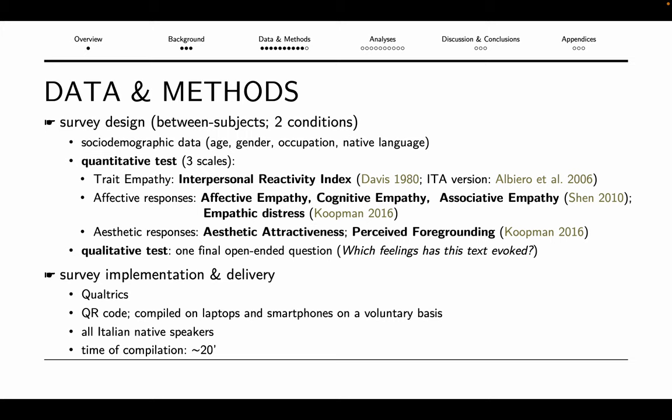The surveys contained the same sections and only differed in terms of the versions of the excerpts provided. They contained a sociodemographic inquiry; the Interpersonal Reactivity Index test to assess trait empathy; my own adaptation of an affective and aesthetic responses test drawing upon ready-made scales; the State Empathy During Message Processing scale by Shen, which accounts for affective empathy, cognitive empathy and associative empathy; and three dimensions from the Narrative and Aesthetic Feelings scale by Koopman — empathic distress, aesthetic attractiveness, and perceived foregrounding. Finally, the survey included an open-ended question to integrate the quantitative test, inquiring about the specific feelings evoked by reading. Surveys were conducted online through the Qualtrics interface and generally required no more than 20 minutes.